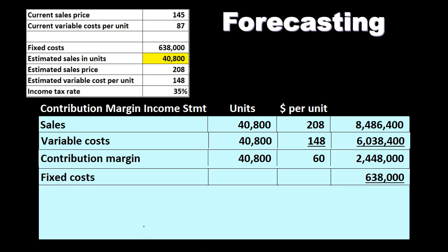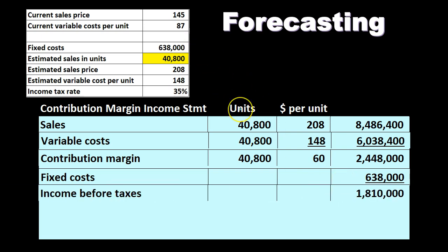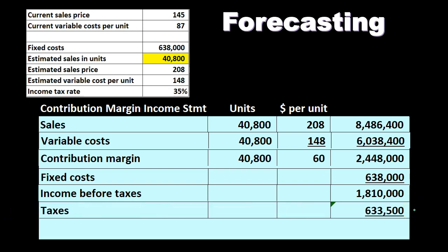The next item is the fixed costs. Notice we're not multiplying by 40,800 because fixed costs don't depend on how many units we make — they're fixed. The fixed cost goes right over as 638,000. Then we have income before taxes: the contribution margin of 2,448,000 minus the fixed costs of 638,000 gives us 1,810,000. Then we calculate the tax — 633,500 — and that gives us the net income. So that's our base calculation.